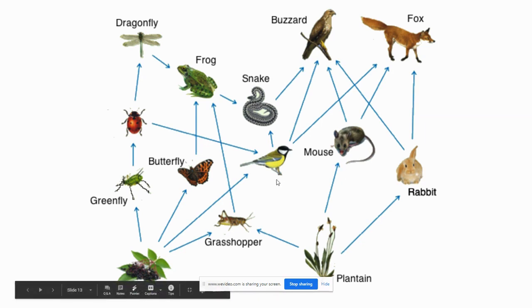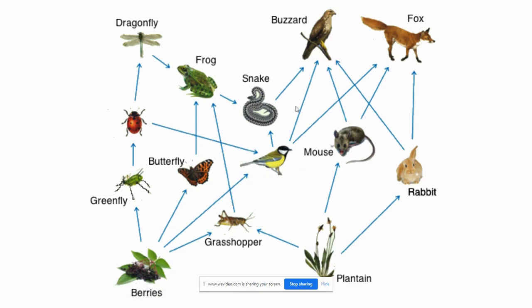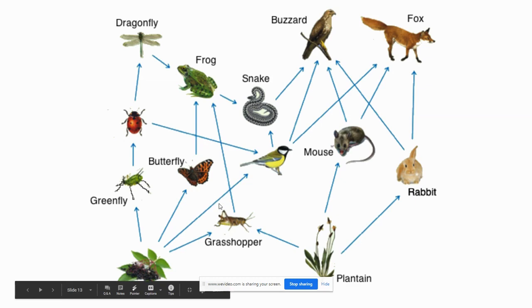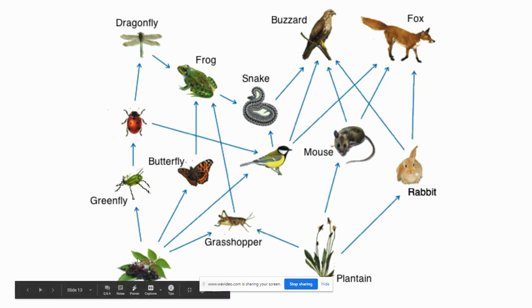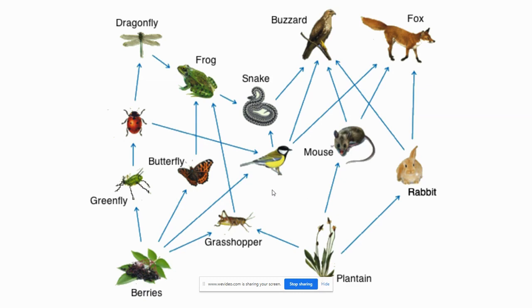The important thing to know is that if one thing disappears out of the food web, all other organisms are affected. If the berries disappear because of disease or over-harvesting, all those organisms will have no energy from the berries — they'll either adapt and find another food source or die. If those insects die, it affects the organisms above them, and so on. If one species disappears from an ecosystem, many different organisms are affected.